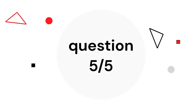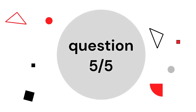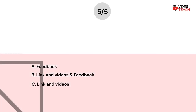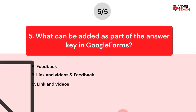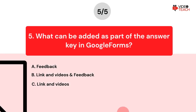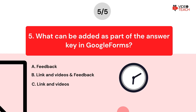Question number five. What can be added as part of the answer key in Google Forms? Option A: Feedback. Option B: Links, videos, and feedback. Option C: Links in videos. Now you have about 15 seconds to think about your answer.